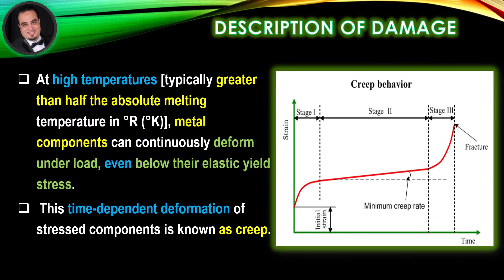Description of damage: At high temperatures, typically greater than half the absolute melting temperature in degrees Rankine or Kelvin, metal components can continuously deform under load, even below their elastic yield stress. This time-dependent deformation of stressed components is known as creep.